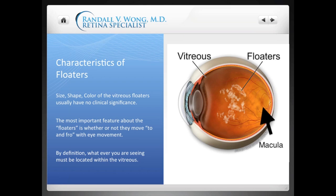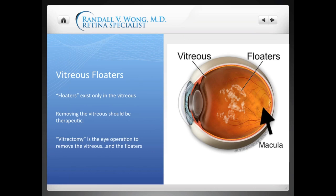So vitrectomy is the fancy term for basically removing the vitreous. The idea is confirming that whatever you're seeing is indeed suspended within the vitreous gel of the eye. And therefore, if we remove it, you should get a lot better. Make sense?